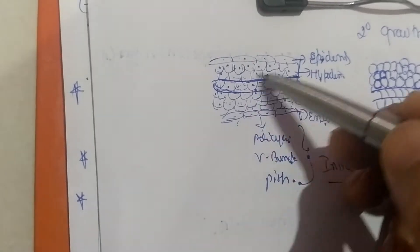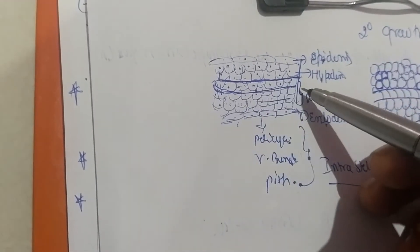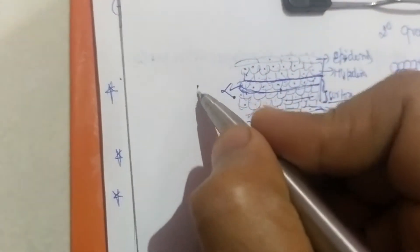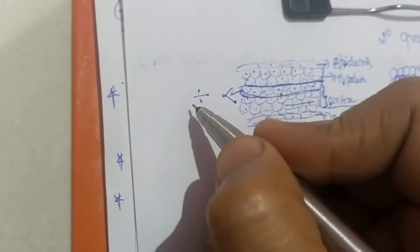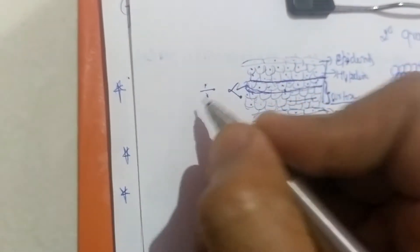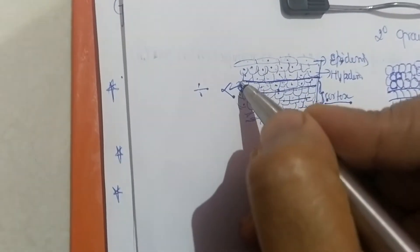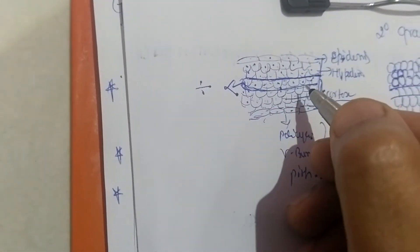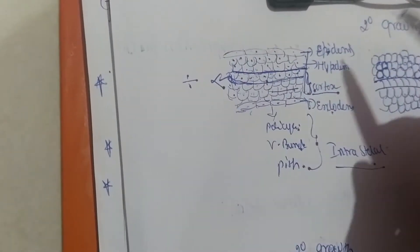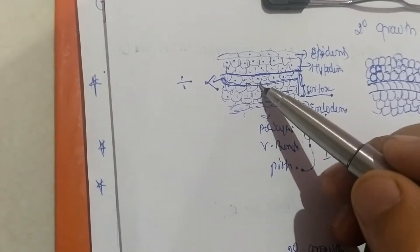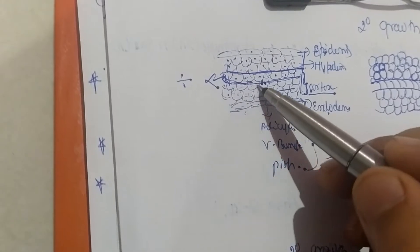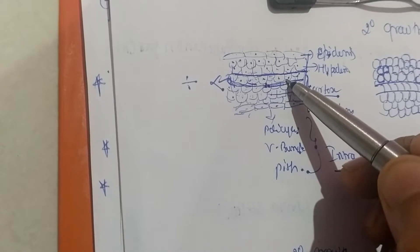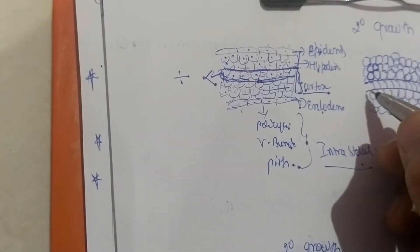De-differentiation means these parenchyma cells, which form together the cortex, have the ability to divide and form some other cells or tissue. That process is called de-differentiation — these cells having the ability to divide and re-divide to form other cells and tissue. The parenchyma cells of the cortical region de-differentiate; taking only the example of this single layer, the cells in this layer de-differentiate and form what are called meristematic cells.